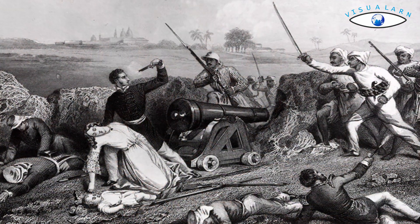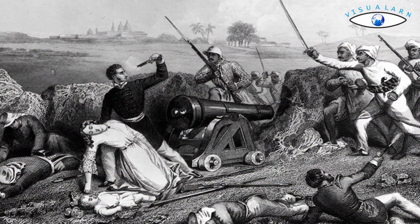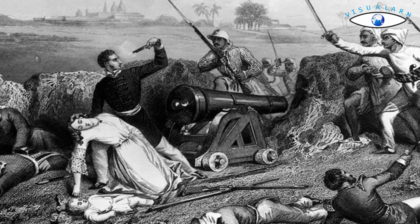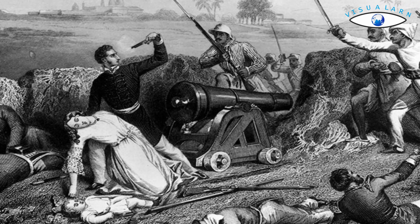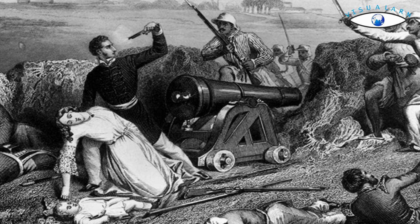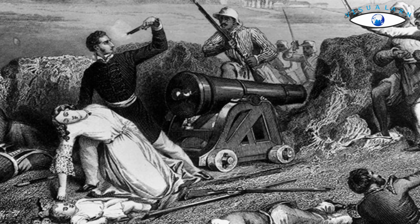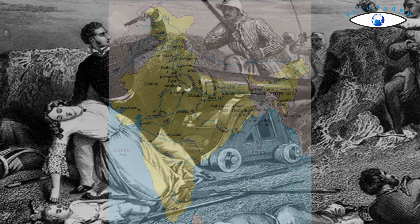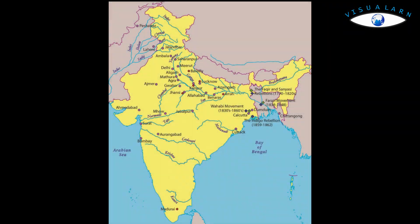Also, shortage of modern weapons, lack of discipline, and lack of proper planning were other causes for the defeat of the rebels. From the end of 1857, the British had begun to gain ground again.